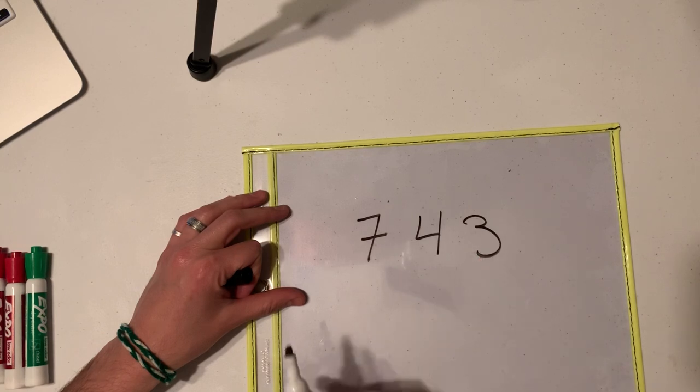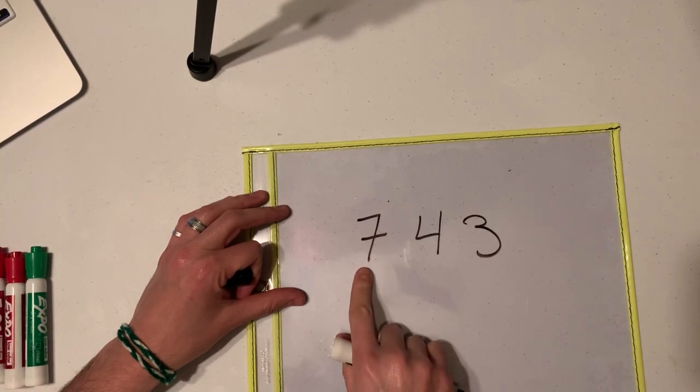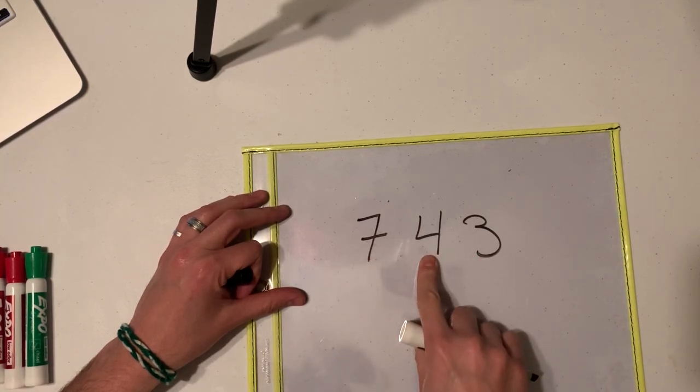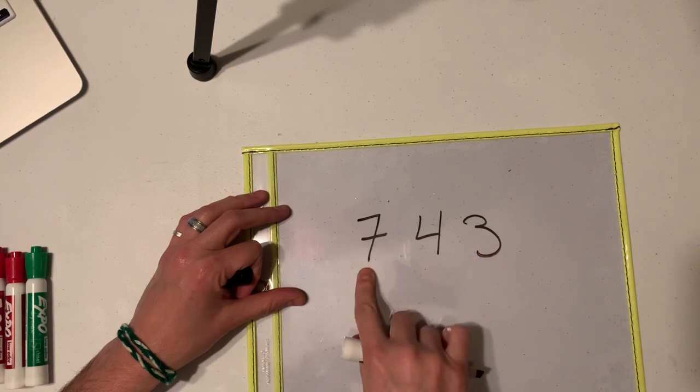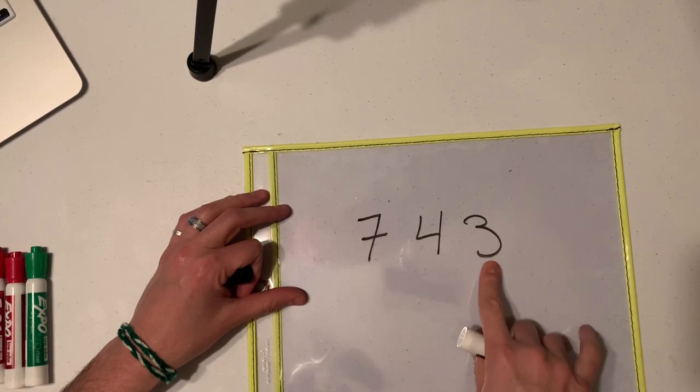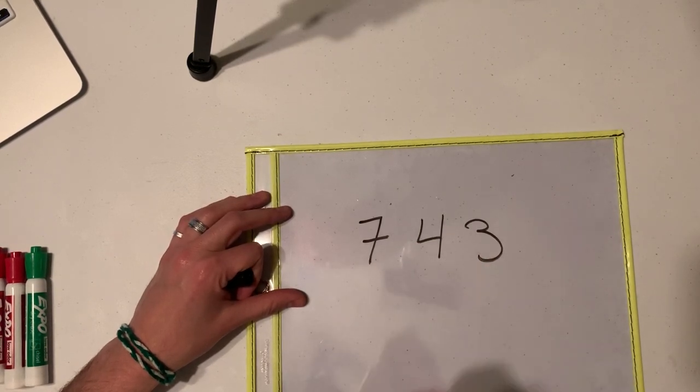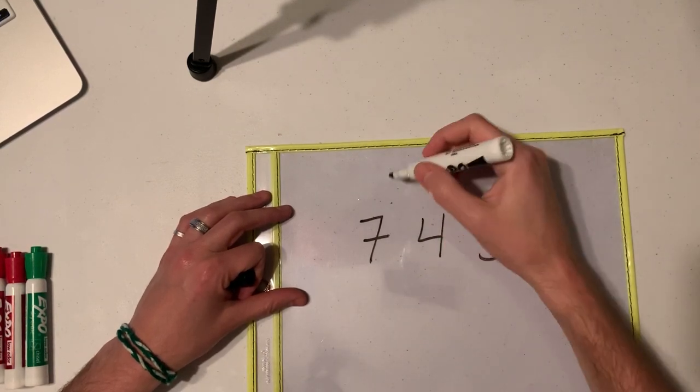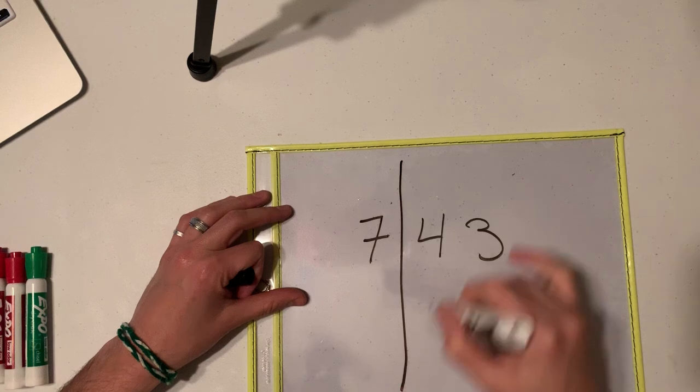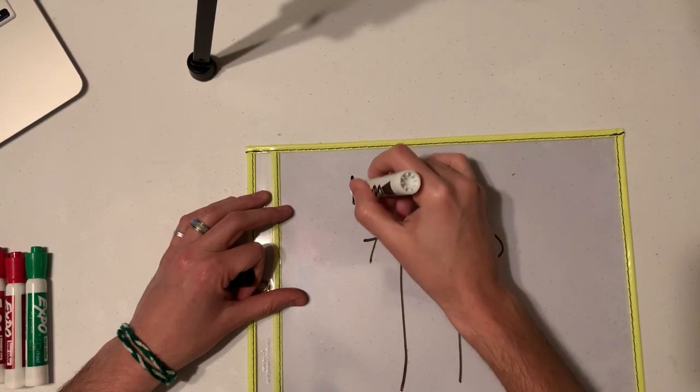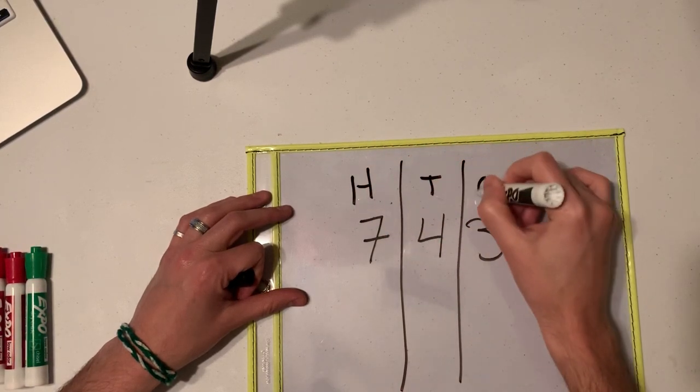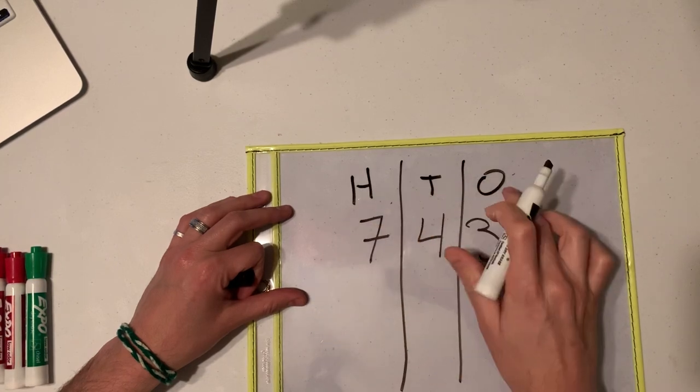I have a three-digit number. We have 743. Hundreds, tens, and ones. Remember that? Now, we're going to do the HTO. I hope you guys still remember the HTO. H-T-O. The hundreds, tens, and ones.